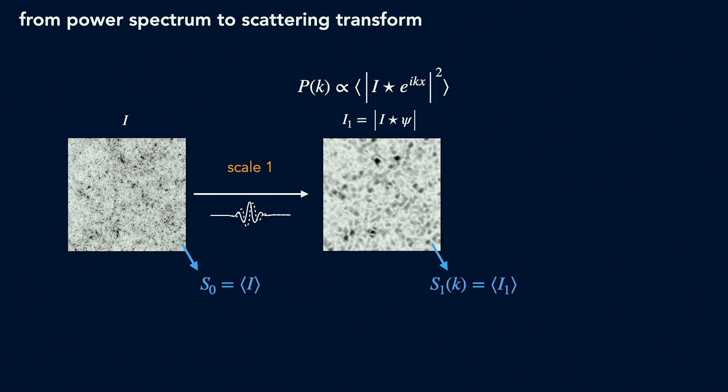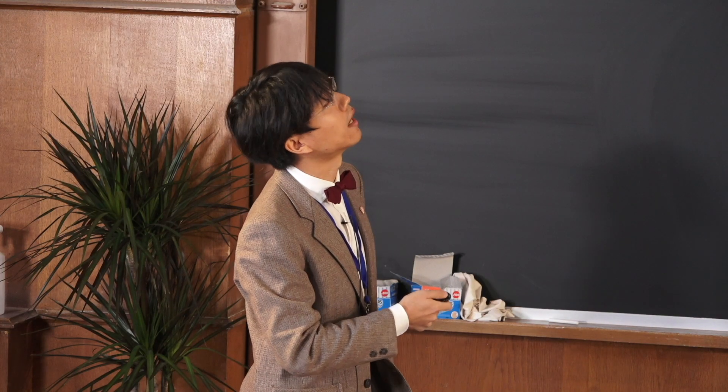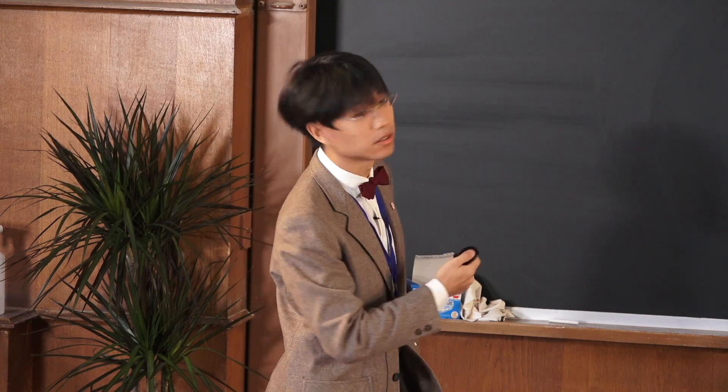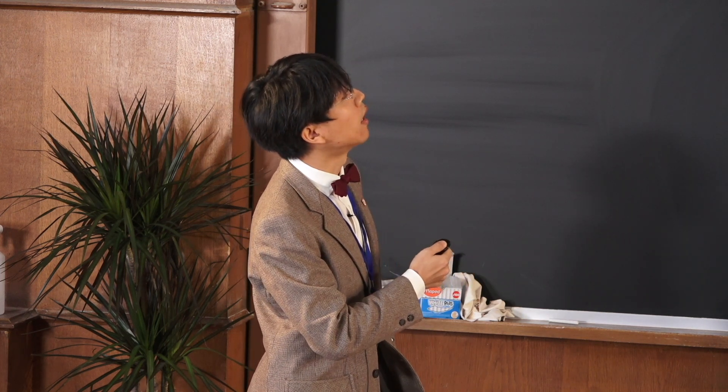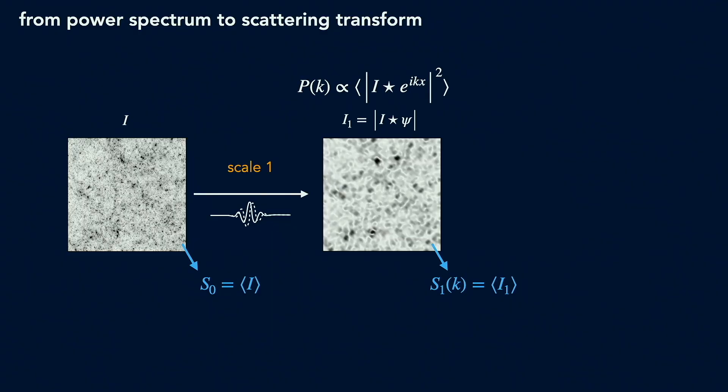The first interesting thing we realize is that the power spectrum in the real space can be written as a one-layer convolutional network as here. You have the convolution kernel and also non-linearity which is square and you have the global pooling. So the scattering transform is basically in its first layer doing something very similar, but it used wavelet instead of Fourier mode as the kernel and also used modulus instead of modulus square as the non-linearity. So the point to make these two modifications is that by doing that, you can go to the...